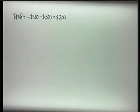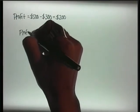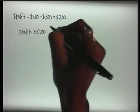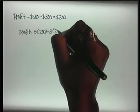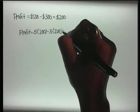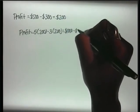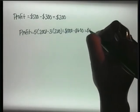Now, using the idea of guess and check, how many CDs would you have to sell to have a profit of $250? If the profit equals 5 times 200 minus 3 times 200, that would equal $1,000 minus $600, and that would equal $400.